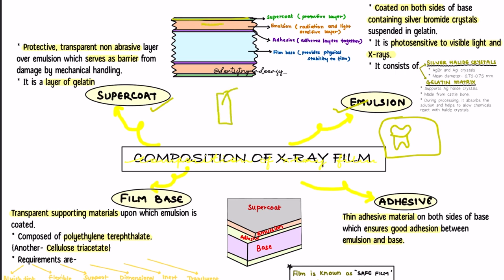The supercoat is a protective layer — it is transparent and non-abrasive, meaning it will not get abraded. It is present over the emulsion and serves as a barrier from damage by mechanical handling, such as scratching the film, contamination, or pressure from rollers during automatic processing. In all these cases, the film is protected by the supercoat. It is an additional layer of gelatin that serves as a protective barrier.